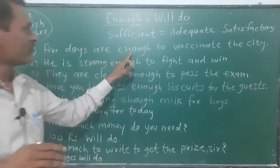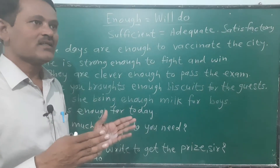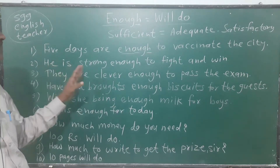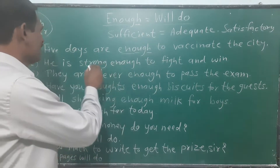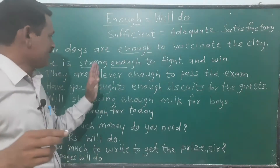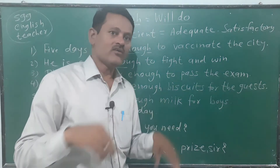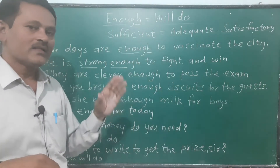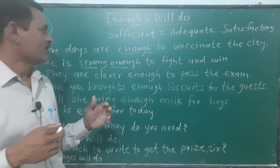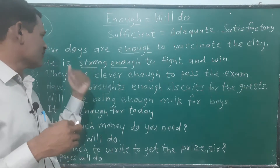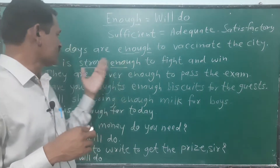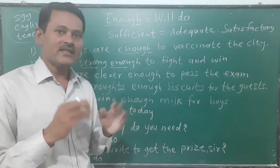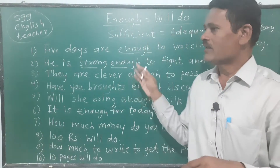Five days are enough to vaccinate the city. He is strong enough to fight and win. The pattern is: adjective plus enough, followed by an infinitive. He is clever — enough to crack the exam.